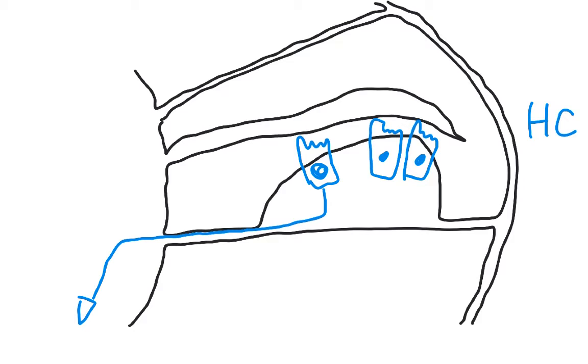The outer hair cells, on the other hand, receive signals from the brain. And when these get signals from the brain, they will push on the tectorial membrane, which will amplify the movements of the tectorial membrane, making it easier for us to hear sound. Damage to either group of hair cells can lead to problems with hearing.